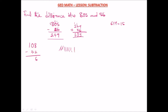Can we take 4 away from 0? No. So we borrow a 1 — that borrowed 1 is worth 10, so 10 + 0 = 10. Taking 4 from 10 leaves 6. So our answer is 66. To confirm, add 66 + 42 and you get 108.